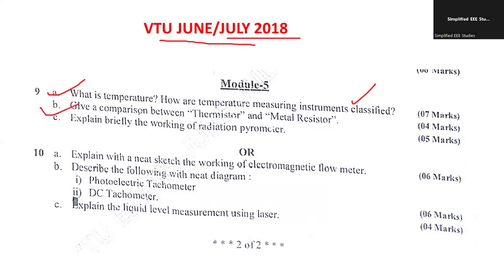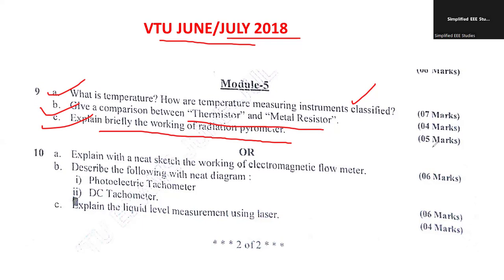Give a comparison between thermistor and the metal resistor. You have to explain with the help of characteristics. Then, briefly explain the working of a radiation pyrometer, which carries 5 marks — 2 marks for your diagram and 3 marks for your explanation.